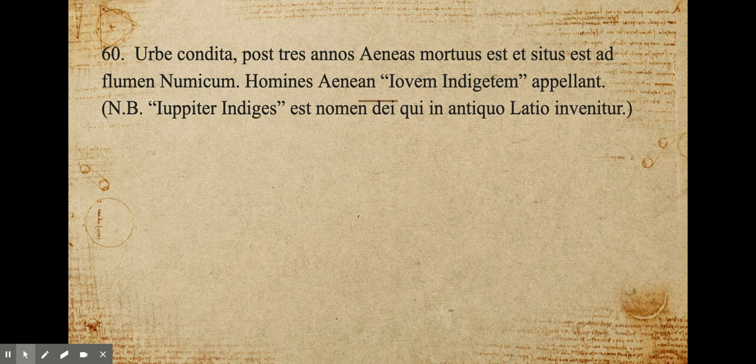With the city having been established — post tres annos, after three years — Aeneas died and was buried at the river Numicus. People called Aeneas the local Jupiter — Iuppiter Indiges. Nota bene, Iuppiter Indiges is the name of a god found in ancient Latium. And there we go. Valete omnes, lingua Latina est vita!